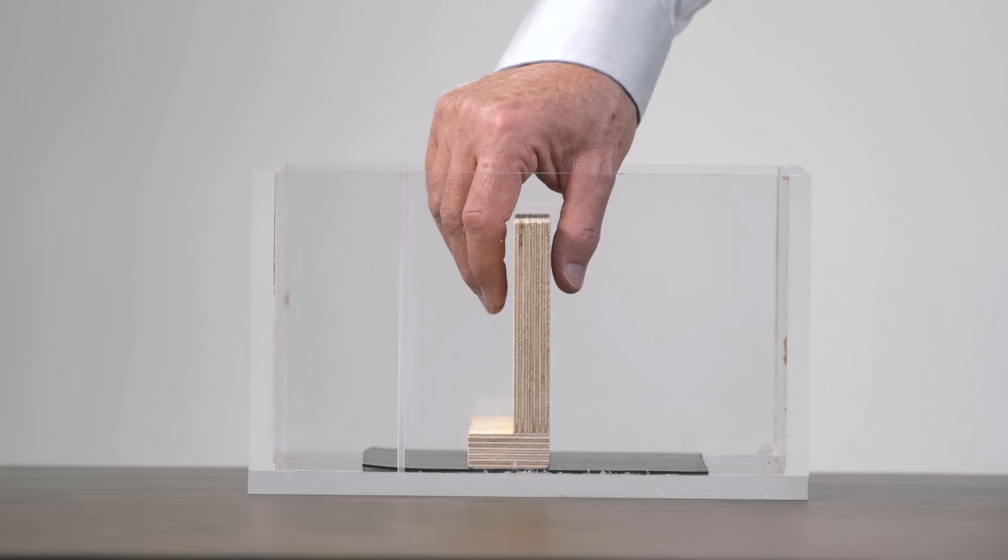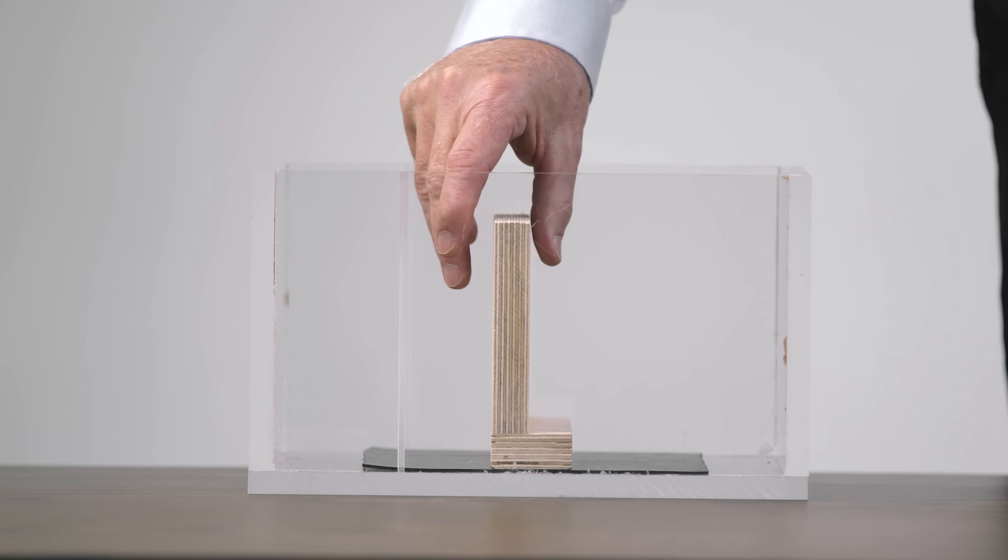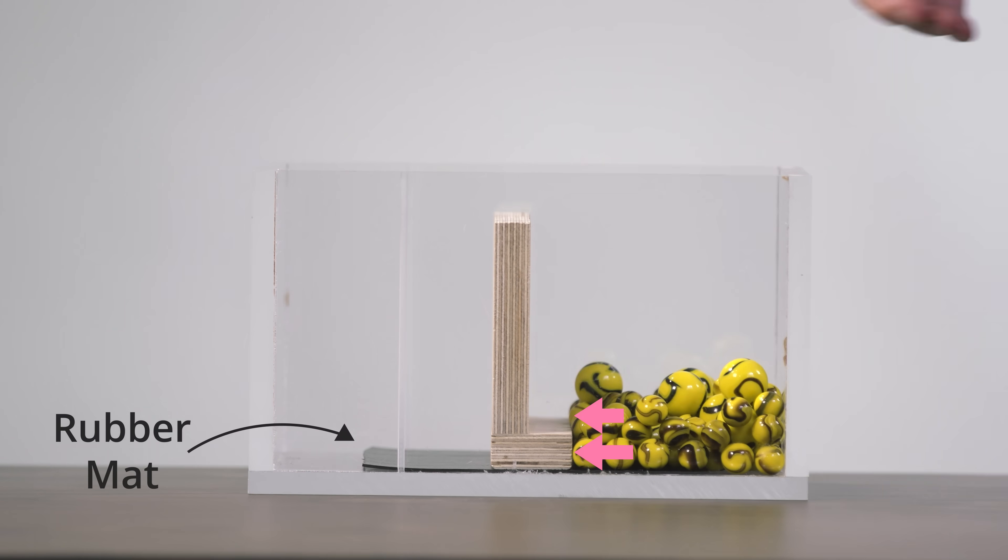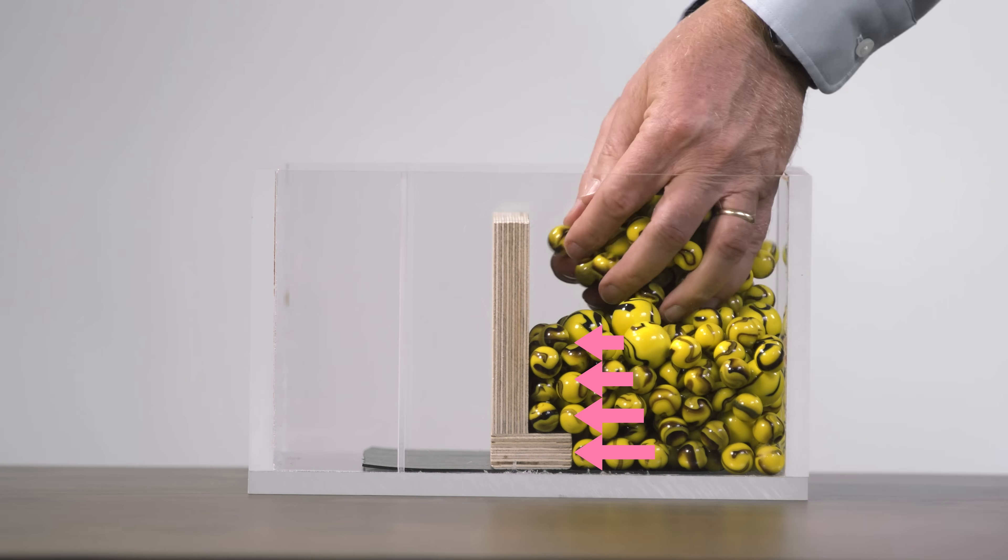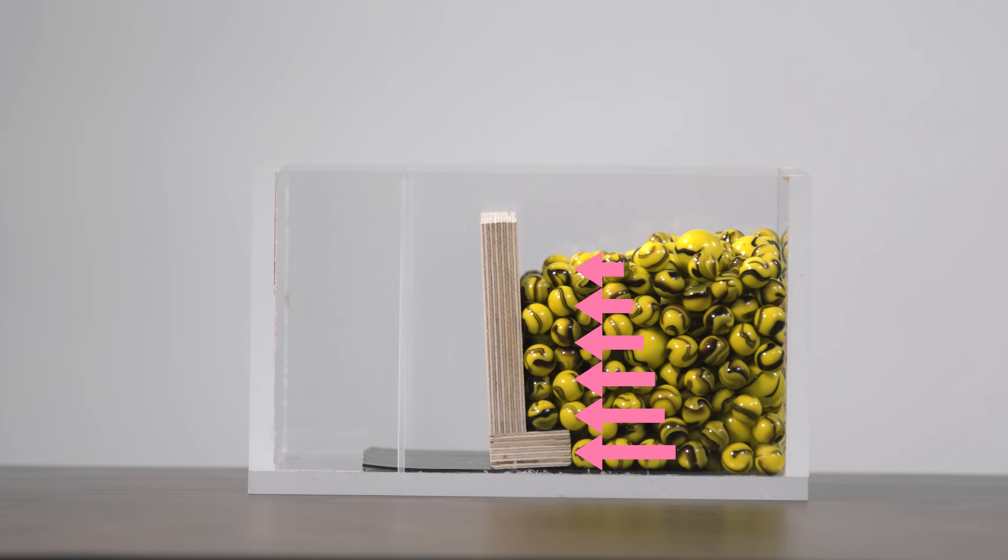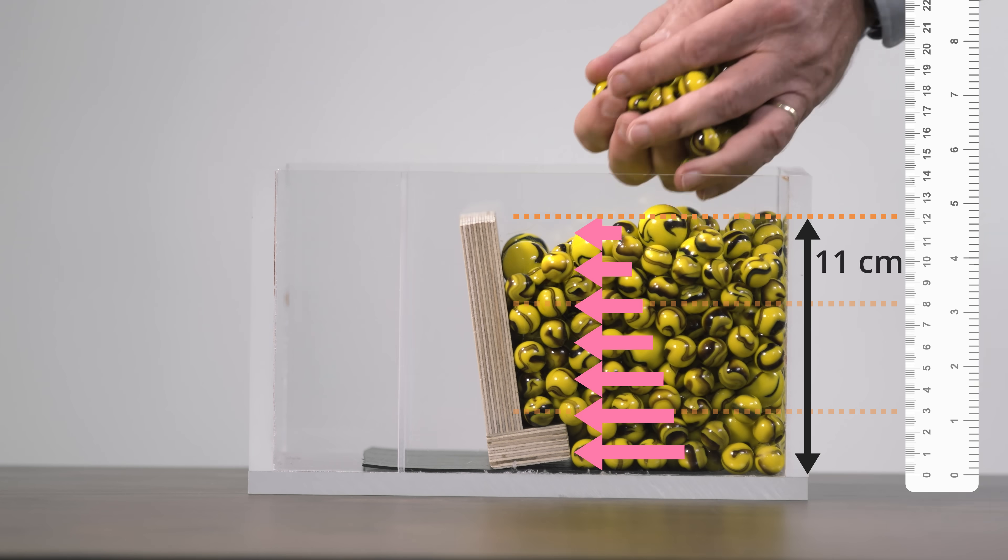Now let's turn the wall around so its bottom leg points towards the right, the side where the marbles will be placed. We again use a rubber sheet to prevent sliding, and we add some marbles. As before, the marbles generate a horizontal force that depends on the marble depth. You might be surprised that this wall can hold back 11 cm of marbles before it overturns.